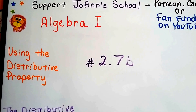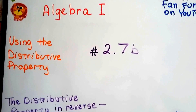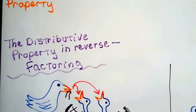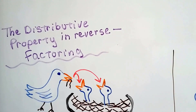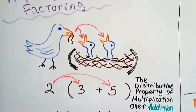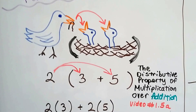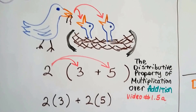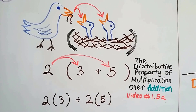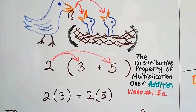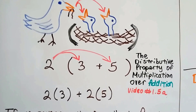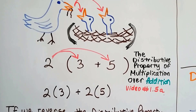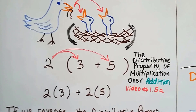Algebra number 2.7b — we're talking about using the distributive property, and now we're going to talk about using it in reverse for factoring. You saw in the last video we had the mother bird distributing food to her babies in the parenthesis nest. That's the distributive property of multiplication over addition, because the number on the outside of the parenthesis distributes to each number on the inside.